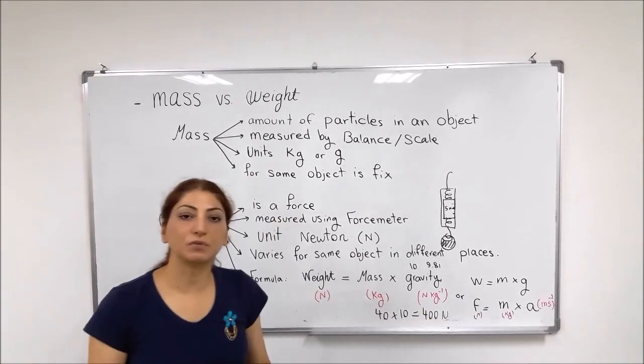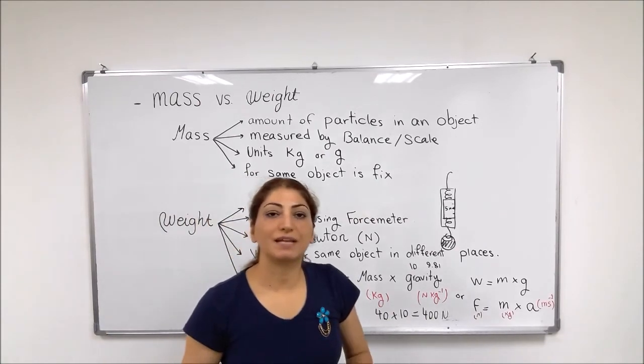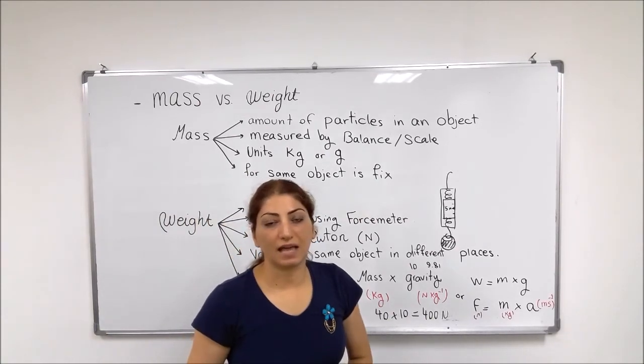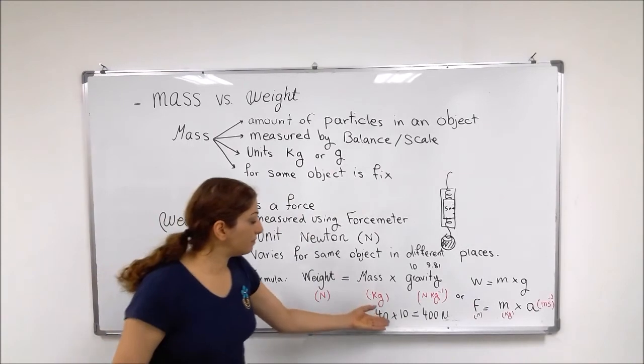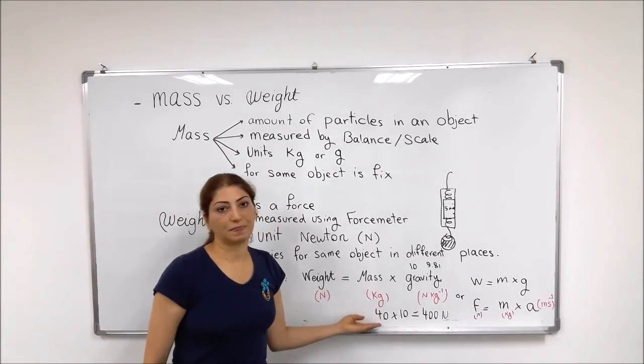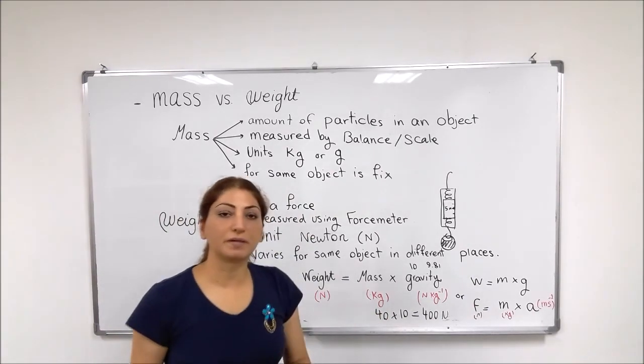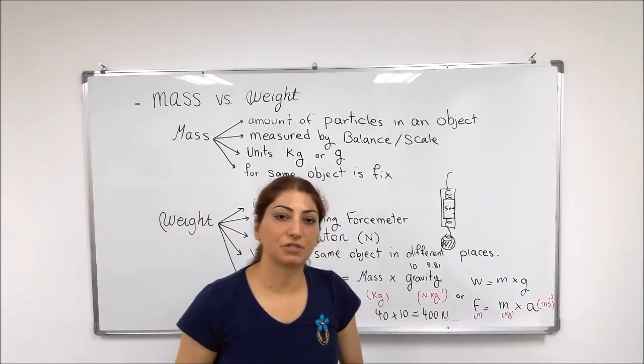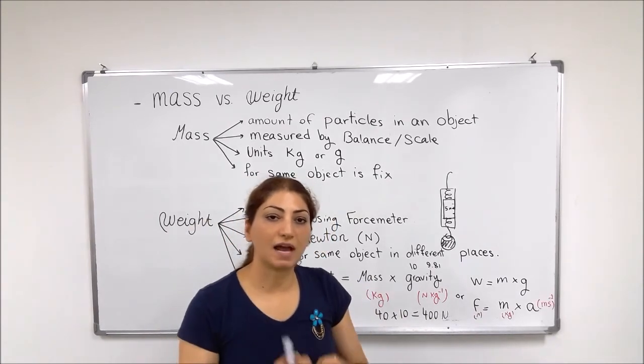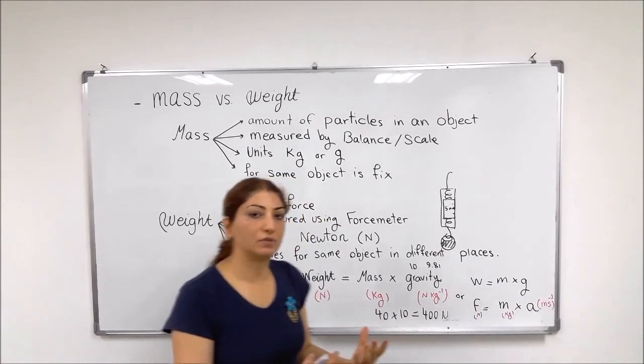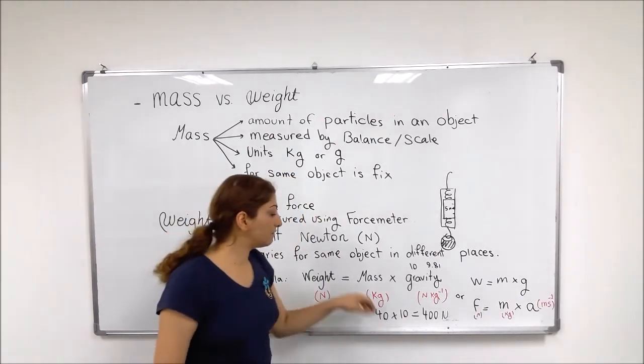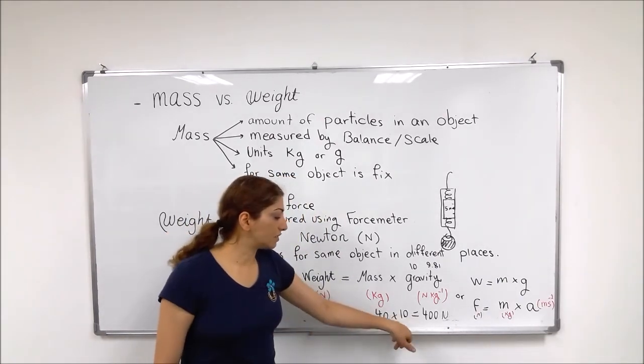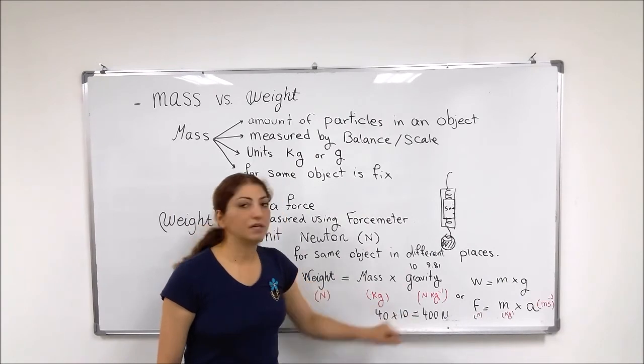If I am taken to the other planets and they have less gravity than the earth, of course, my weight will be less. If I am taken to the other planets and they have a higher gravitational field than the earth compared to the earth, it means that my weight will be more because this number here, the value increases.